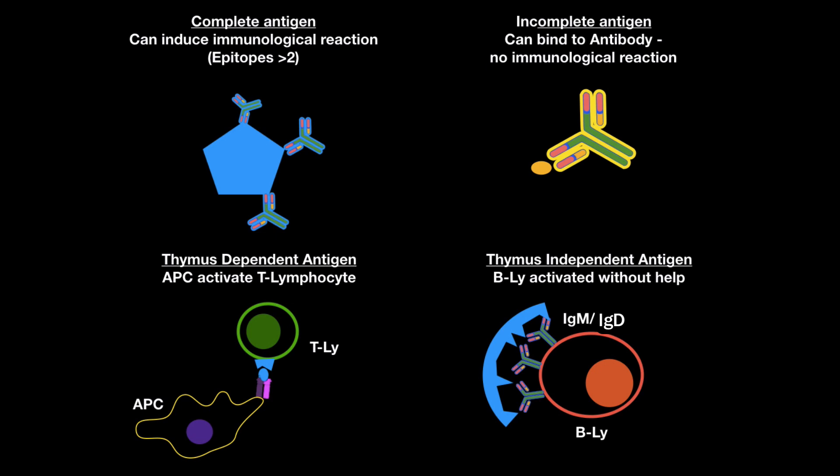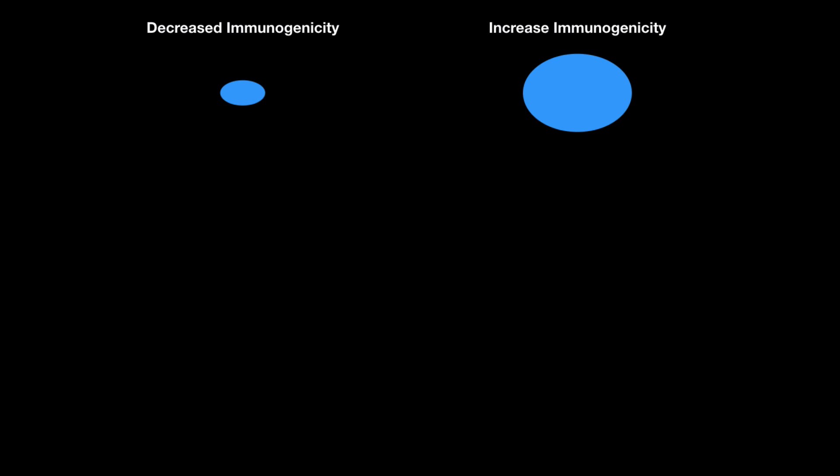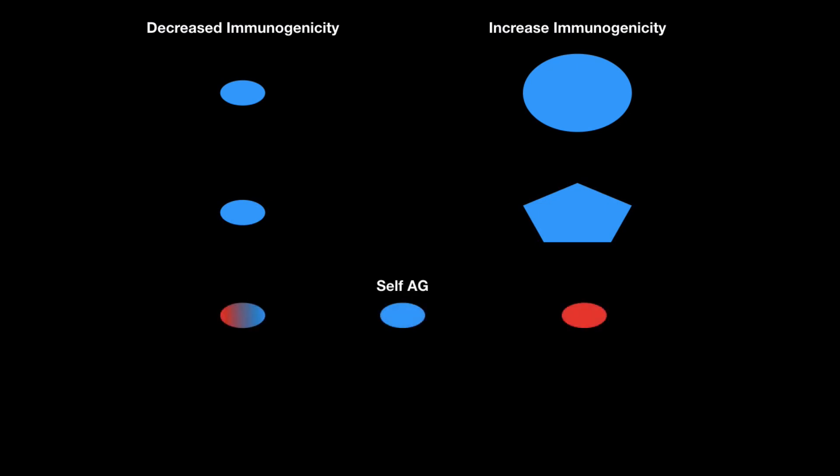Just to sum up: if it's a small antigen, there is decreased immunogenicity — meaning a small chance of inducing an immune response — in contrast to a big antigen. Also, the more complex the antigen is, the higher the immunogenicity. Also, if the antigen has many similarities to our own antigens, it will have decreased immunogenicity, in contrast to if it's completely different.